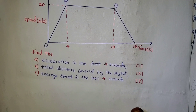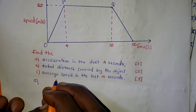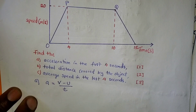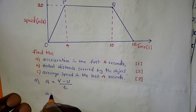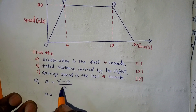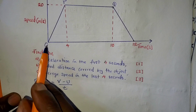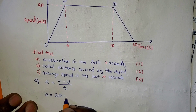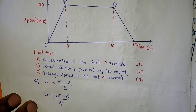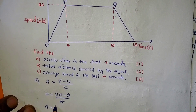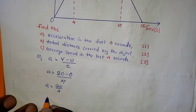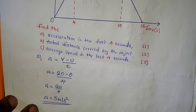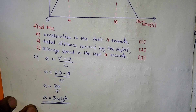For part (a), we use the formula: acceleration = (final velocity − initial velocity) ÷ time taken. The final velocity is 20 m/s, the initial velocity is zero because the object starts from rest, and the time taken is 4 seconds. So acceleration = 20 ÷ 4 = 5 meters per second squared. The units must be squared — that is the unit for acceleration.